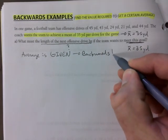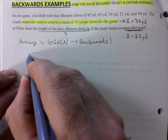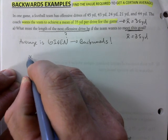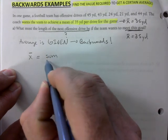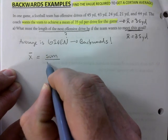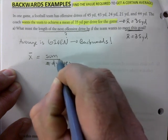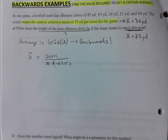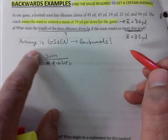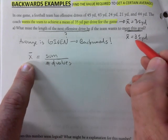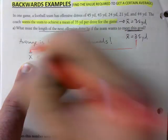So remember your average is the sum of all values divided by number of values. That is the formula in a nutshell. We already know that this average here is 35, so we're going to plug that in.